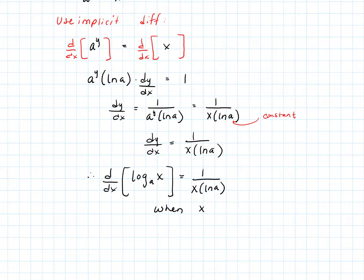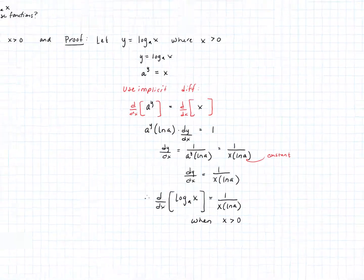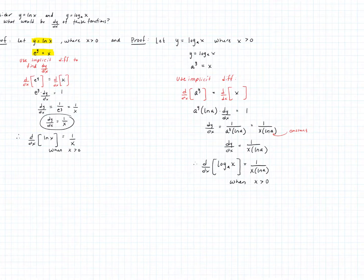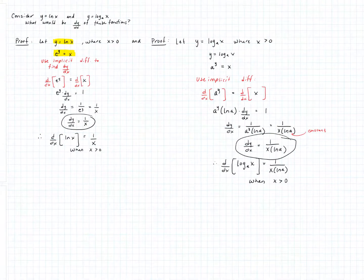When x is greater than 0 — and again, we could throw in absolute values and then we don't need that restriction. There are our two derivatives, proven with pretty easy implicit differentiation. This expands a whole new section for us, a whole new set of derivatives we can look at now, because we haven't taken derivatives of logarithms up to this point and now we can.